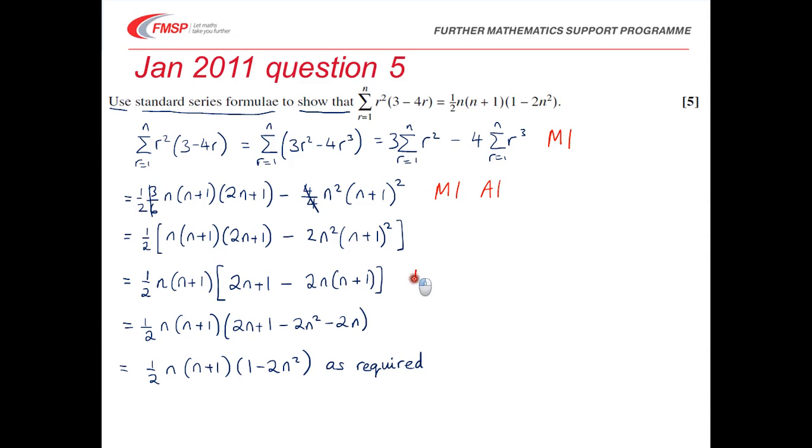There's then a method mark for an attempt to factorise both n and n plus 1. And a final accuracy mark for a complete convincing argument. And that's where you'll lose marks if you've done a bit of fudging, even if you've got the first lot of marks.